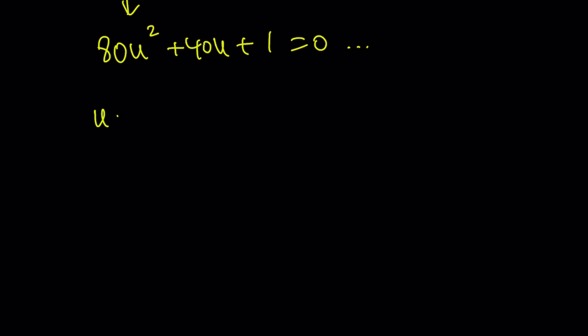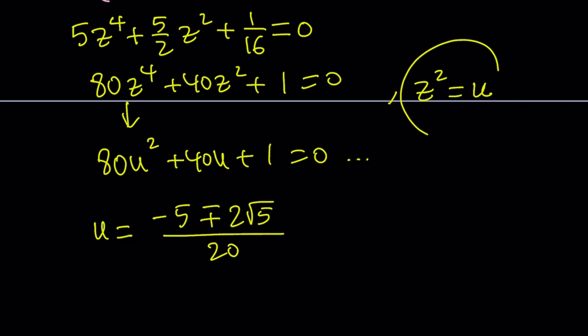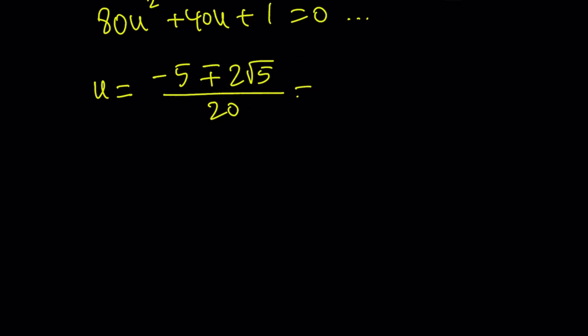But unfortunately, this equation has real solutions. What would you expect? You expect me to say it doesn't? Well, u has some real solutions. So here's what the u values are. Negative 5 plus minus 2 root 5 divided by 20. But remember, u is the same as z squared. And if you set it equal to z squared, from here you should be able to find the z values, right?